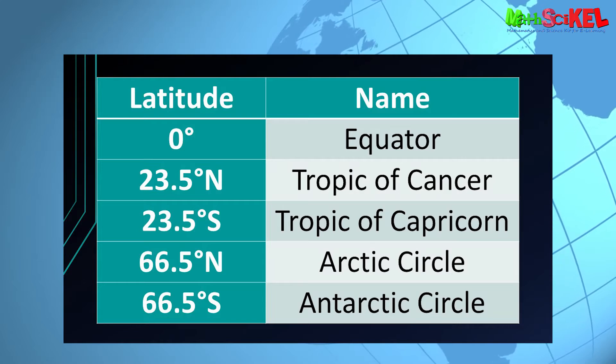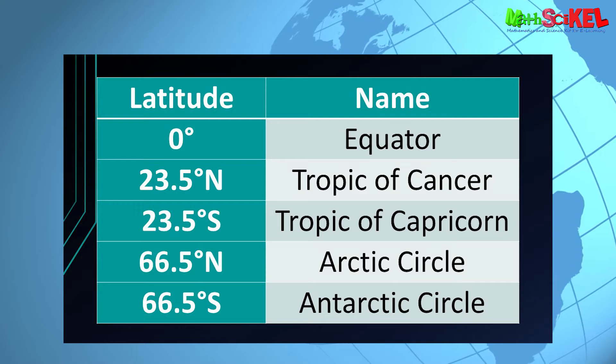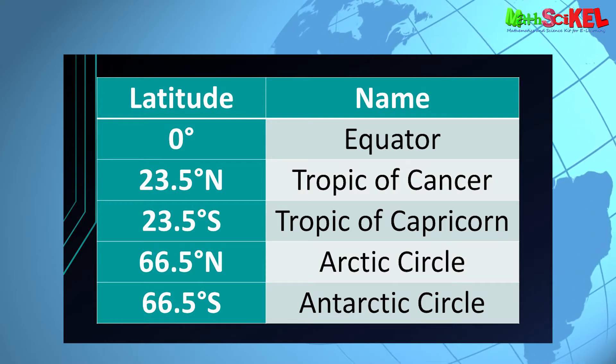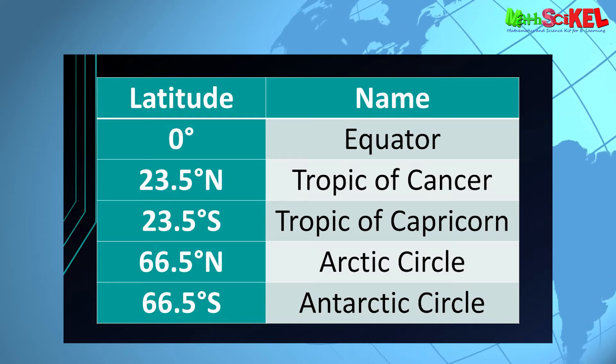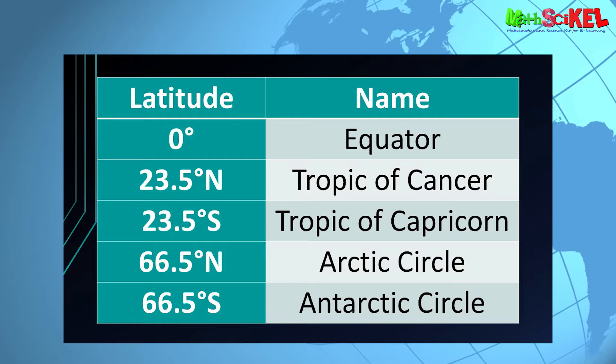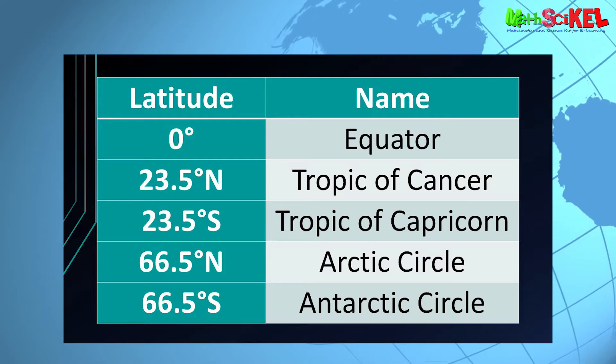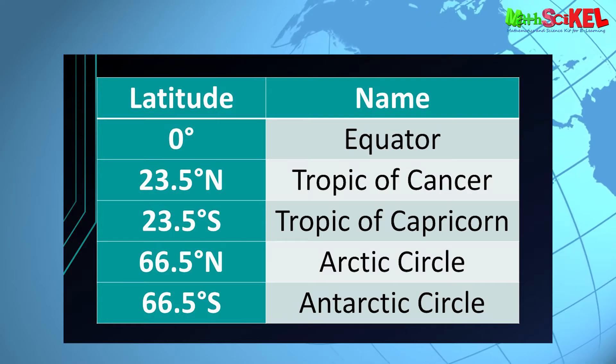Now we know how to describe the location of a place using latitude and longitude. The lines of latitude are also known as parallels of latitude, because they are parallel to the equator and to each other. Five lines of latitude have special names: the equator at 0 degrees, the Tropic of Cancer at 23.5 degrees north, the Tropic of Capricorn at 23.5 degrees south, the Arctic Circle at 66.5 degrees north, and the Antarctic Circle at 66.5 degrees south. To sum up, the closer the latitude is to the equator, the warmer the climate; the closer to the poles, the colder. There is a clear relationship between the latitude of a place and the climate it experiences.